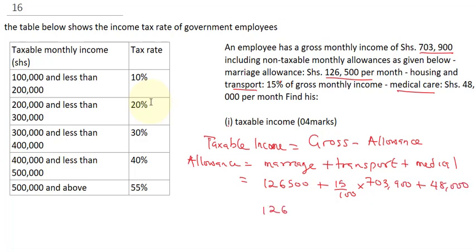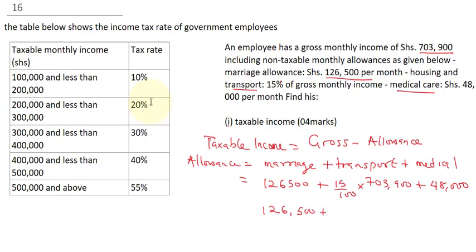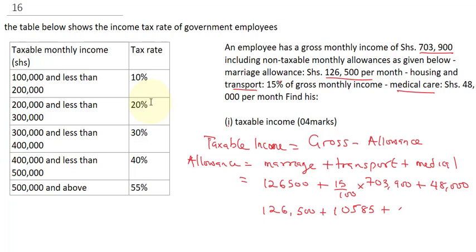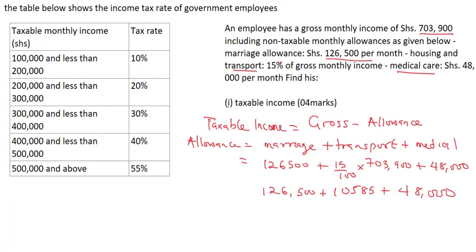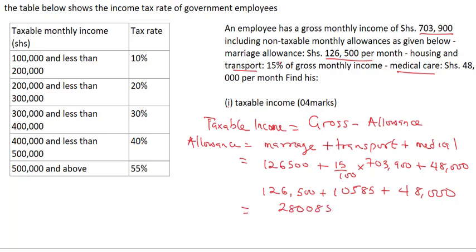Calculating 15% of 703,900 gives us 105,585. So total allowance is 126,500 plus 105,585 plus 48,000. When you sum these up you get 280,085. This is his total allowance.